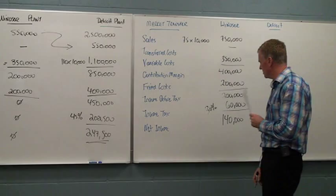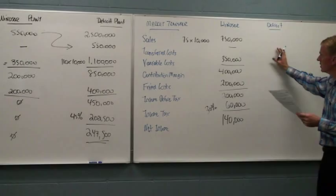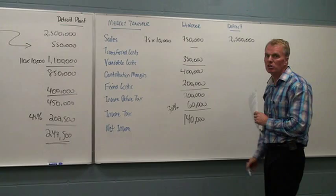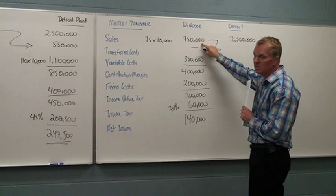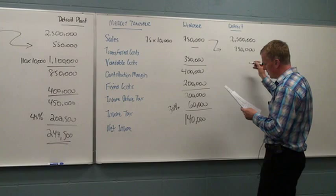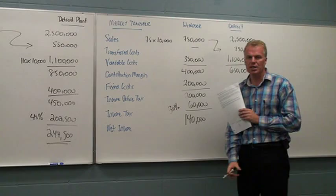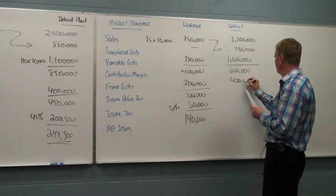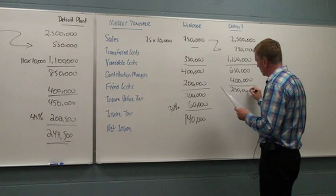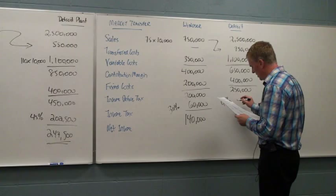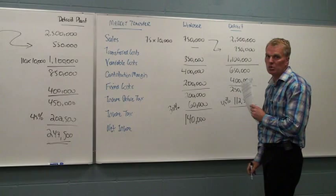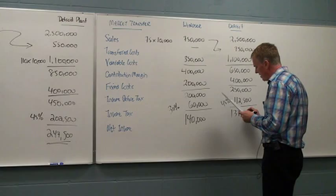Let's carry on now with Detroit. Detroit will have the same $2.5 million for sales, but their transferred in costs are going to be different now. They're going to have to pay $750,000. Variable costs would remain the same. Overall then, your contribution margin is $650,000. Would your fixed costs be any different? No, they wouldn't. So your fixed costs will be $400,000. And therefore your income before tax, $250,000. Your tax rate will still stay at 45%. And you'll have taxes of $112,500. Your net income will be then $137,500.